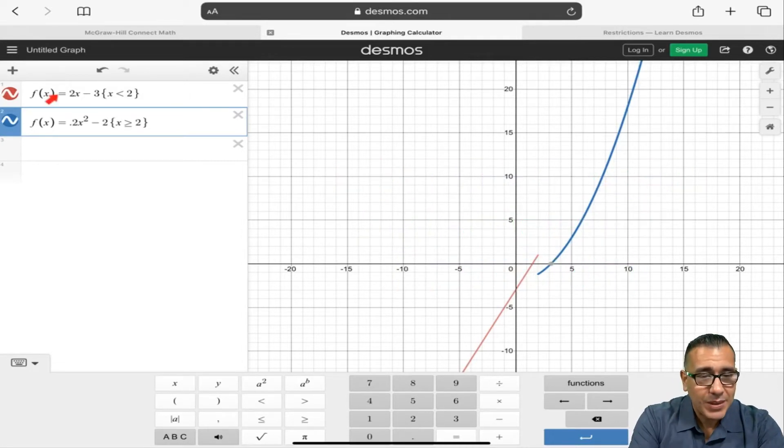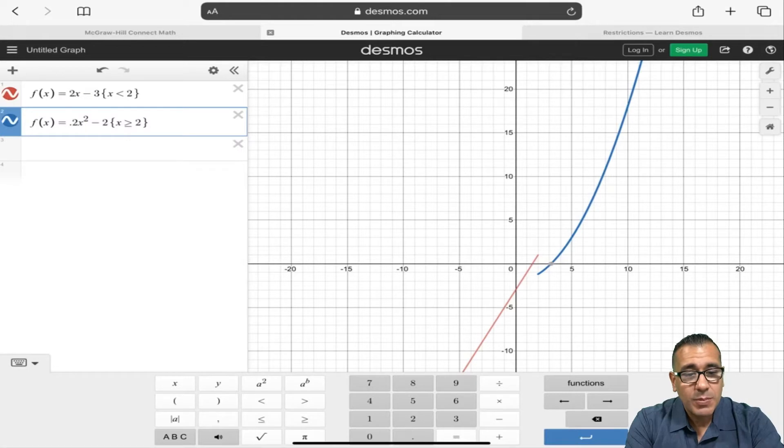So let's say we have this function and it's broken up into these two pieces. The first half is linear. So when x is less than 2, we're going to see it being linear. And when x is greater or equal to 2, we're going to see it's quadratic here. So it's going to be parabolic.